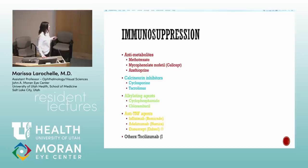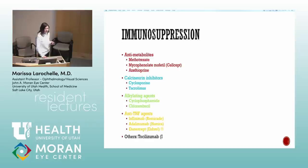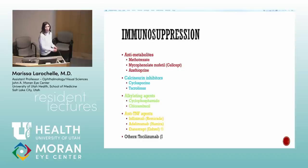TNF inhibitors: infliximab (IV), adalimumab — humanized monoclonal antibody to TNF, subcutaneous injection. Etanercept (Enbrel) is the only one we do not use in uveitis. Pretty much every immunosuppression used for other indications helps uveitis — except Enbrel, which is either not helpful or potentially deleterious, possibly worse than placebo.